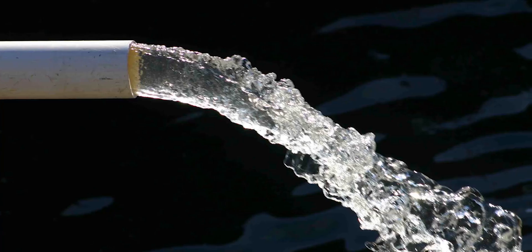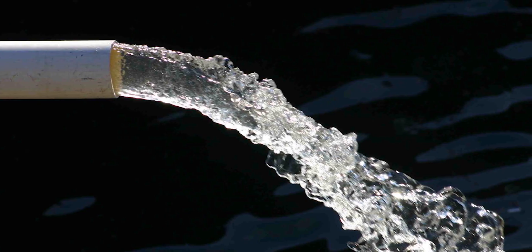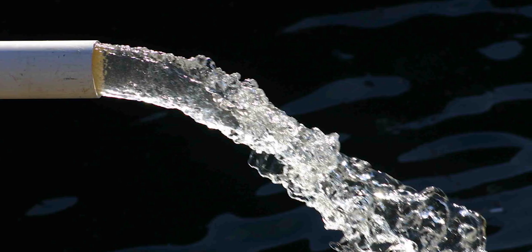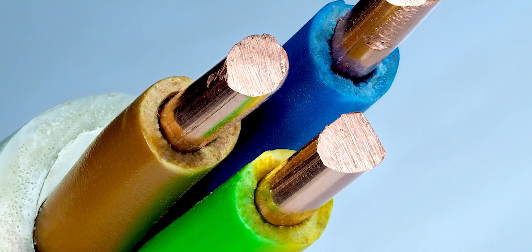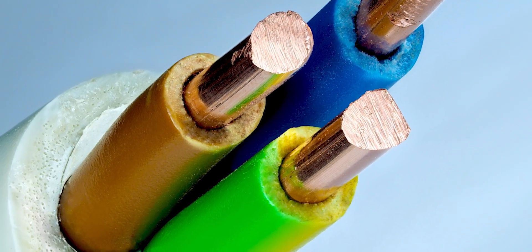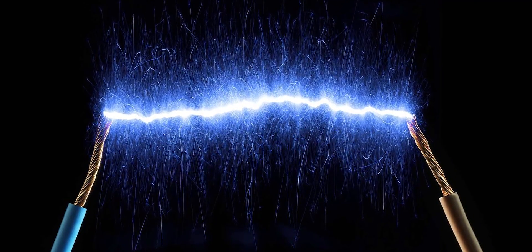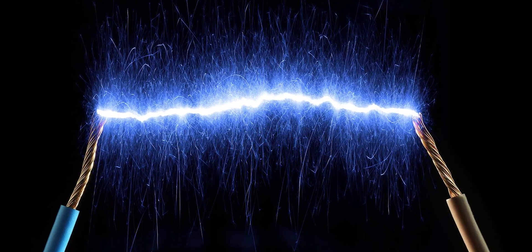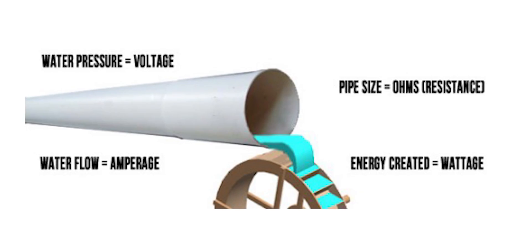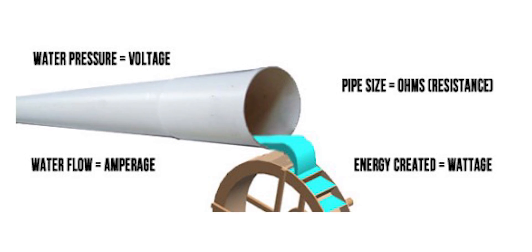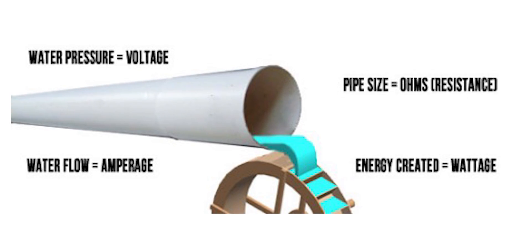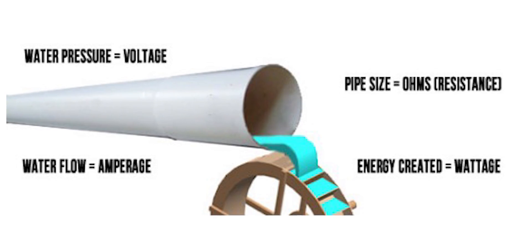Let's talk about a tiny pipe. This tiny pipe represents your wire — the electricity flows through it. So, where is the current? The current is what we measure in amperes. That's what we call amps.